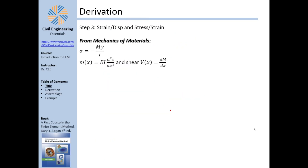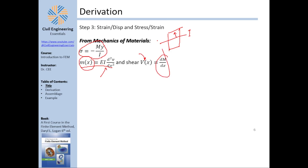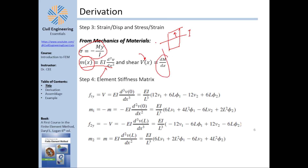We now need the strain-displacement and stress-strain equations. From mechanics of materials: σ = Mc/I (or −My/I), where I is the moment of inertia and y is the perpendicular distance to the neutral axis. From structural analysis, the double integration method gives M = EI·(d²v/dx²), meaning moment equals EI times the curvature of the elastic curve. Additionally, shear is the derivative of moment.